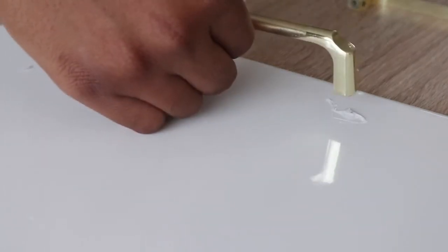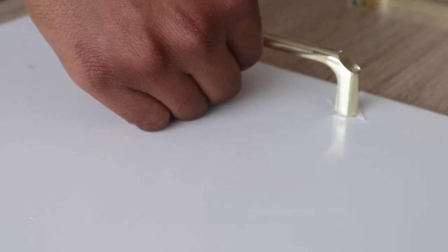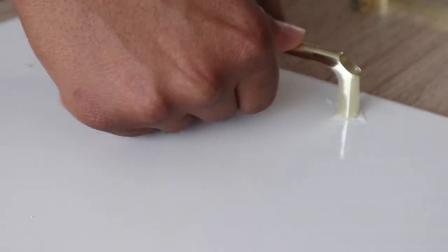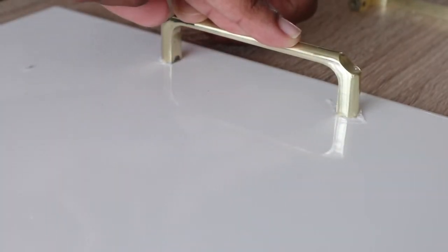Then once you have stuck it on and it is in alignment, before the glue dries you can have a little bit of time just to wiggle it around and make sure that it is straight. Then you can press it down for a few seconds and leave it to dry.